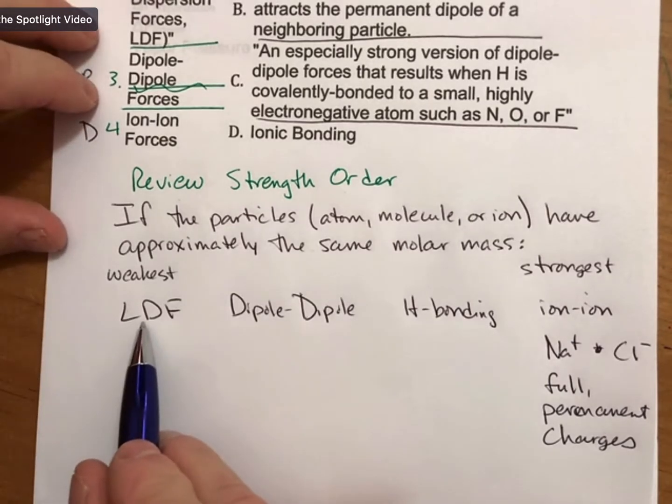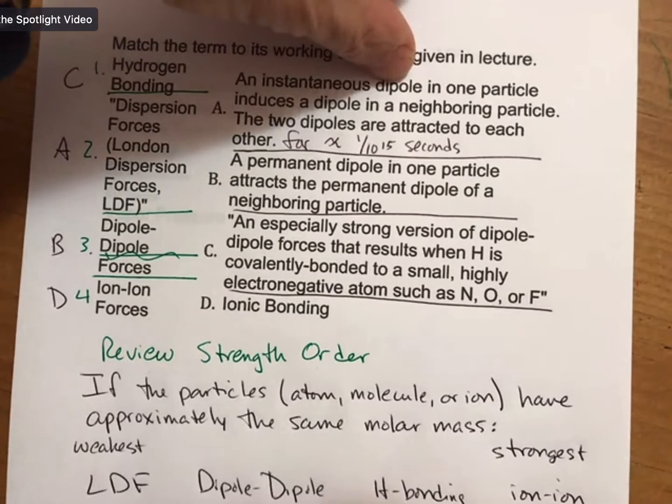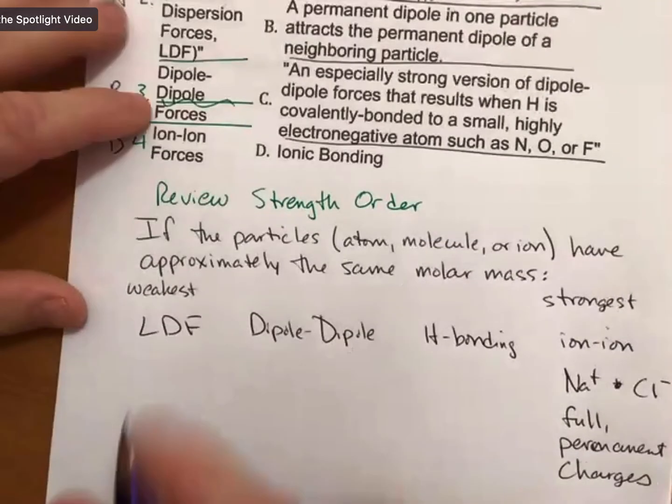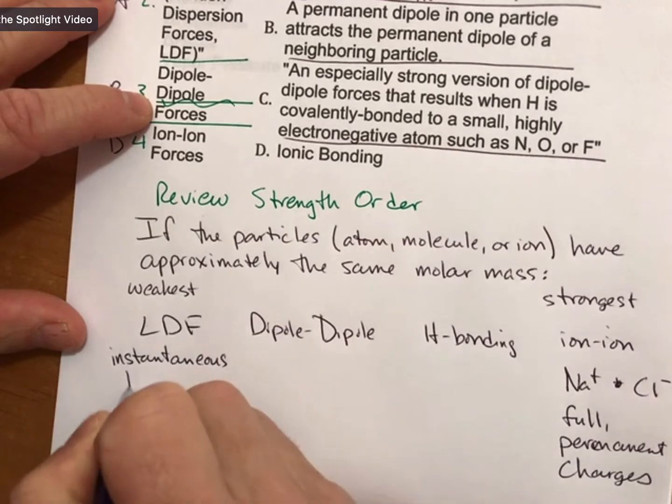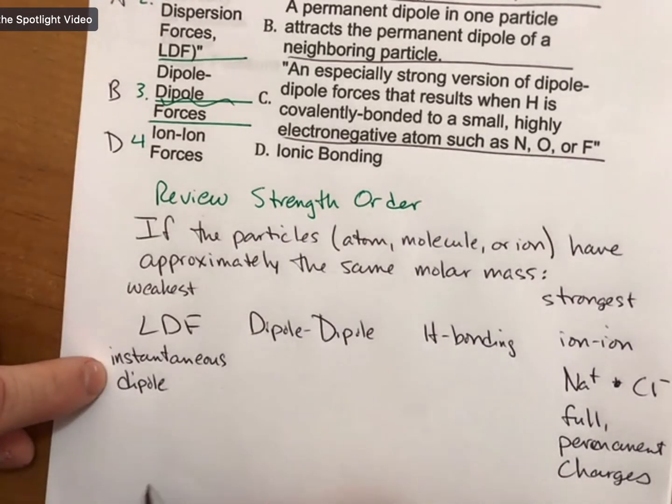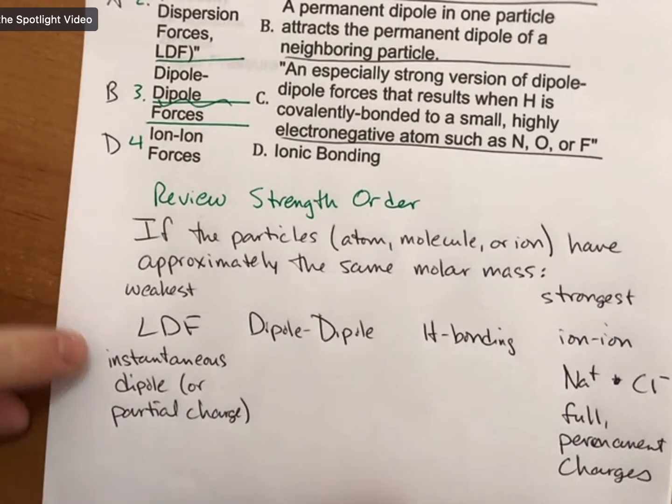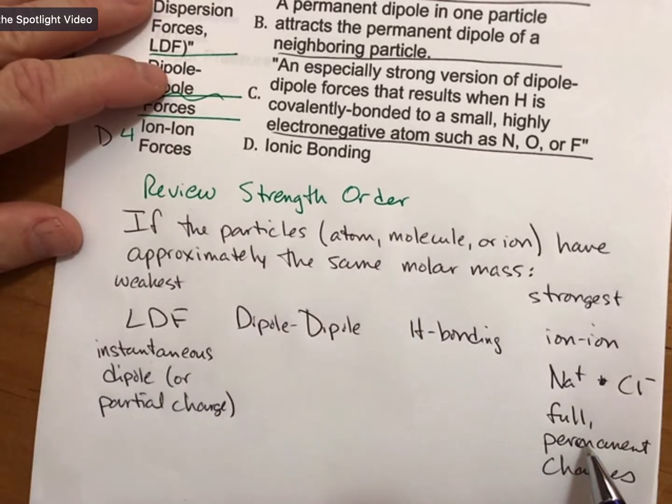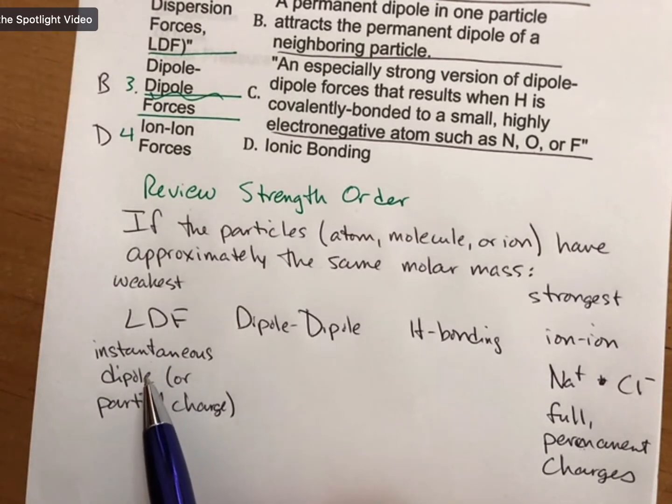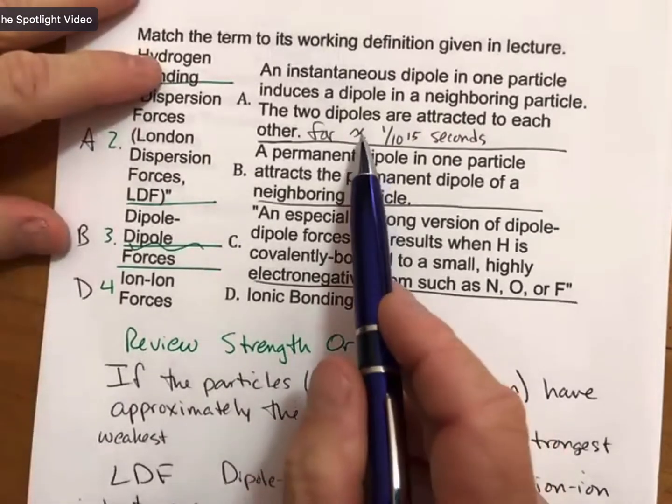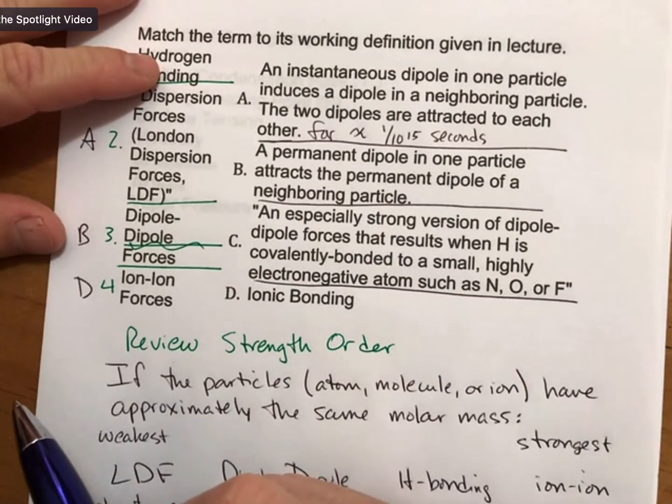On the other side of the weakest ones, those involve instantaneous dipoles, where a dipole is a partial charge. So instantaneous dipole or partial charges. Instantaneous is contrasted with permanent. Permanent means always there, instantaneous means only there for an instant. I said approximately one over ten to the fifteenth second, which is a femtosecond, it does not get much shorter than that.